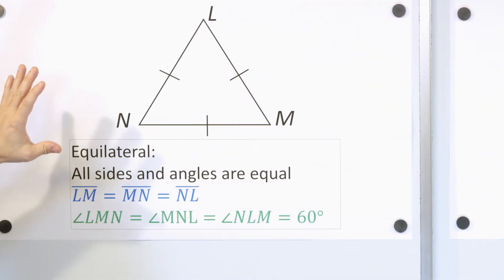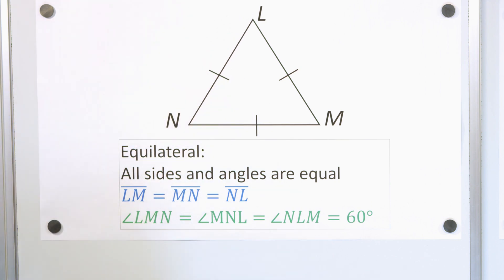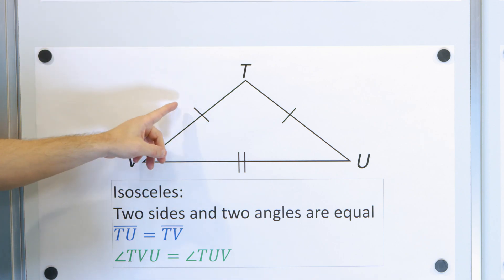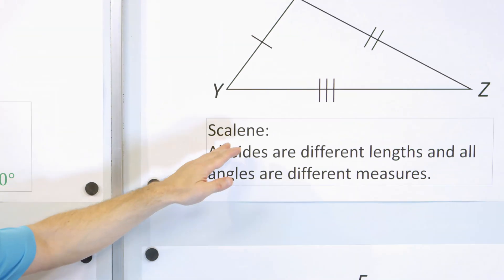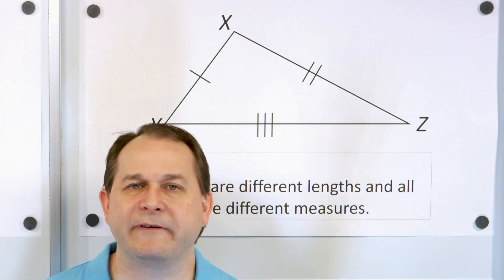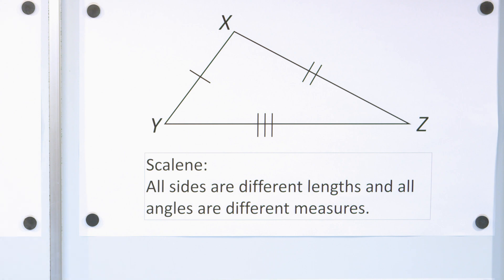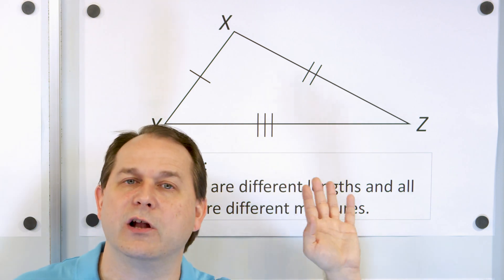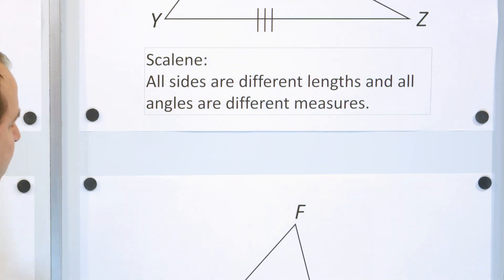So when classifying triangles by their sides, we have: equilateral — all sides equal, all angles equal; isosceles — two sides equal, two angles equal; and scalene — nothing is equal, no sides or angles are the same. Now, if we want to classify triangles in terms of their angles, we have other names as well.